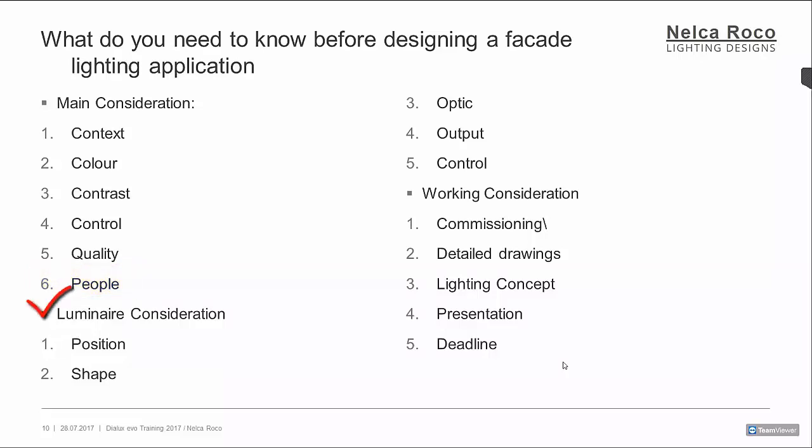Another consideration is the luminaires. You need to know the position of the luminaire — is it on the ground, on a pole, or on the building itself? You need to know the position because, for example, if your building is close to the path walk, you cannot place a surface-mounted floodlight there as it would obstruct pedestrian flow. Also, if your luminaire is bulky and ugly, you don't want it visible during daytime destroying your architectural facade.